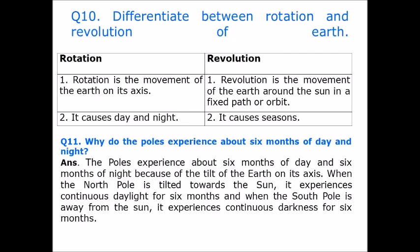Question number 11: Why do the poles experience about six months of day and night? The poles experience about six months of day and six months of night because of the tilt of the Earth on its axis. When the north pole is tilted towards the sun, it experiences continuous daylight for six months, and when the south pole is away from the sun, it experiences continuous darkness for six months.